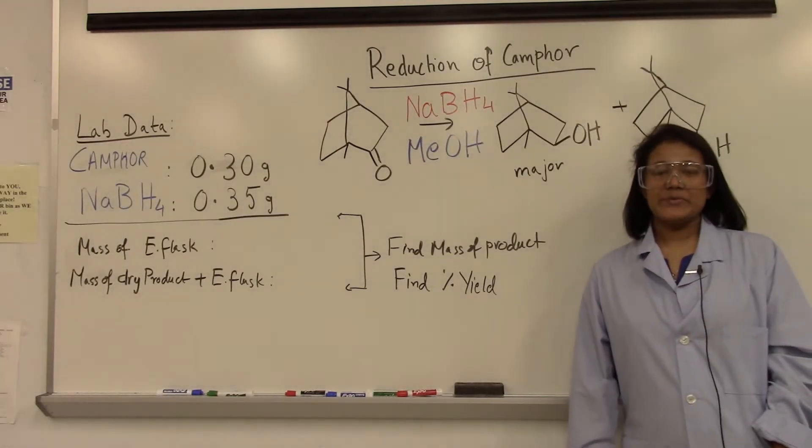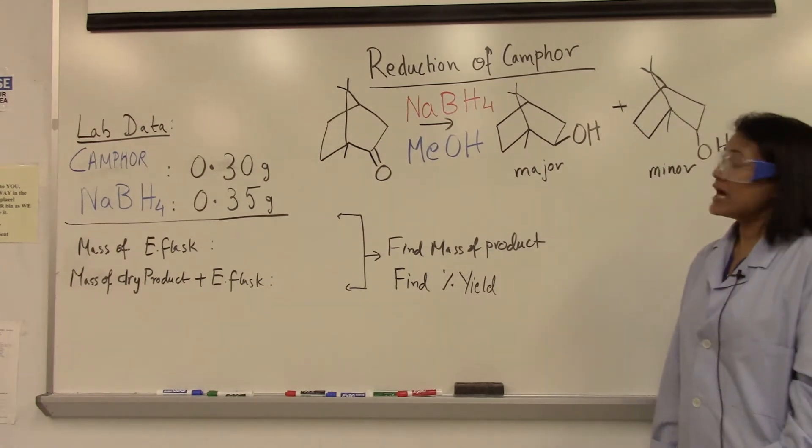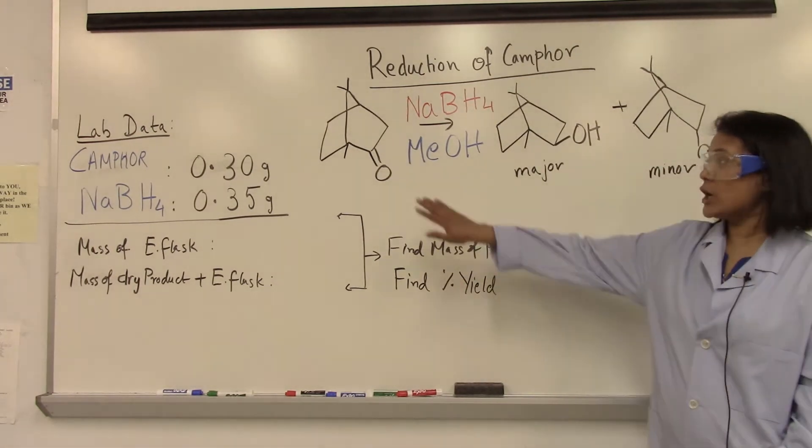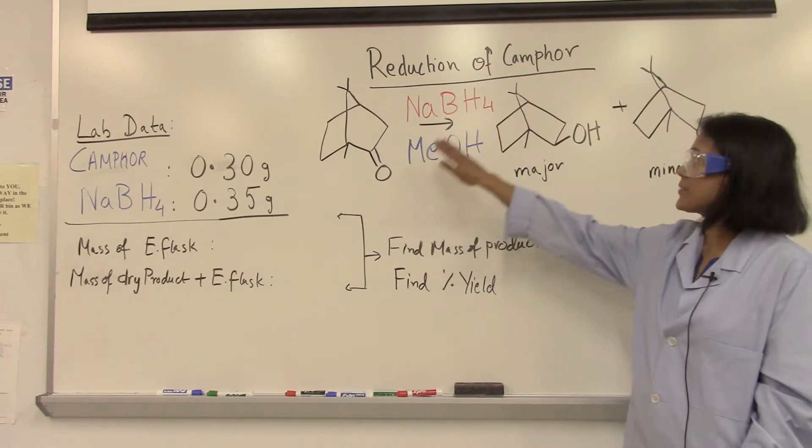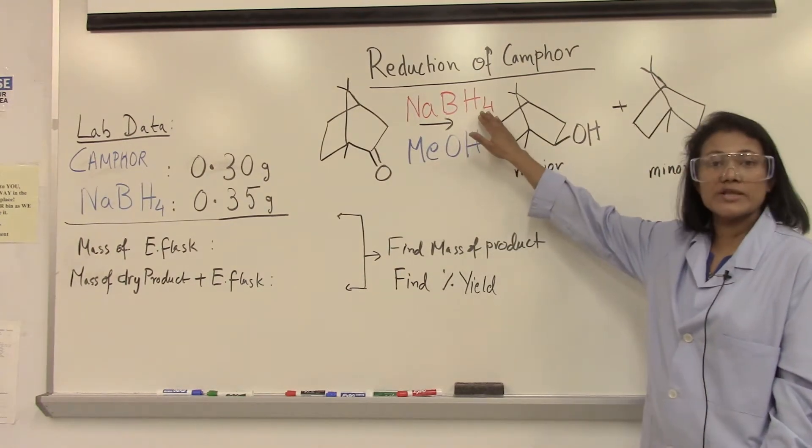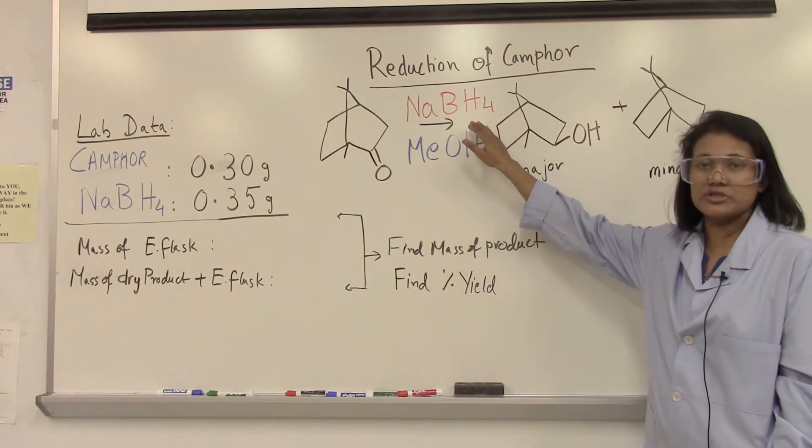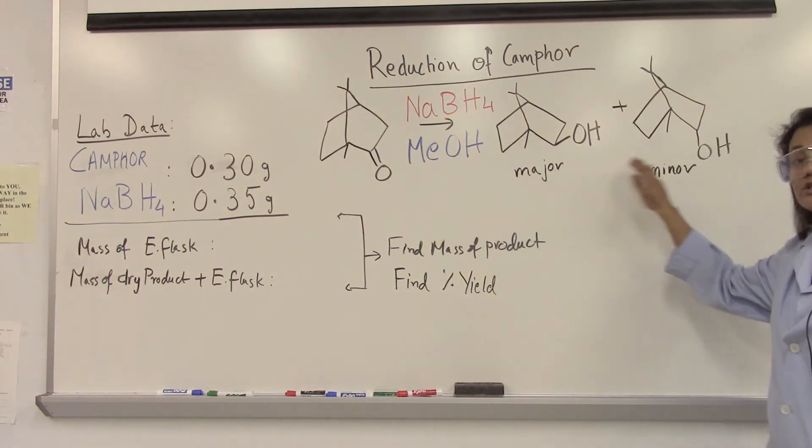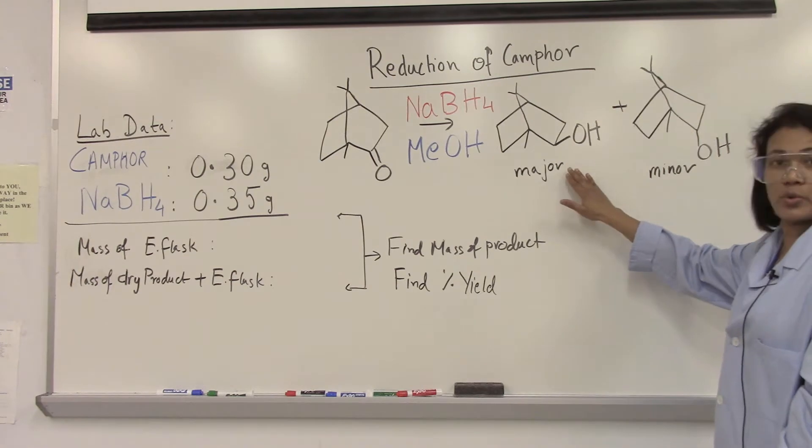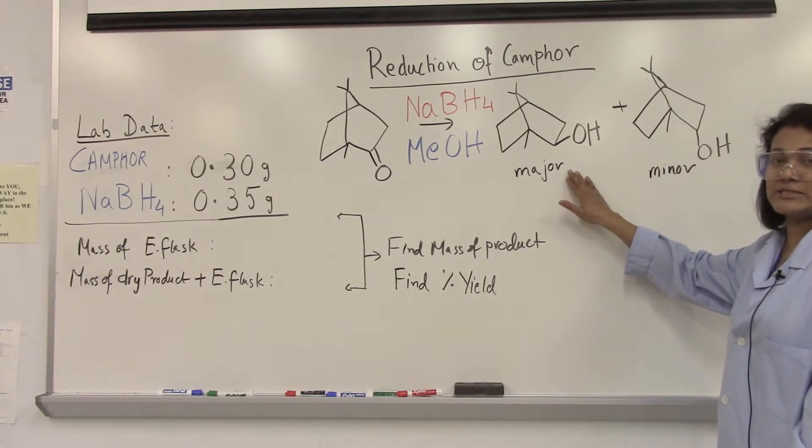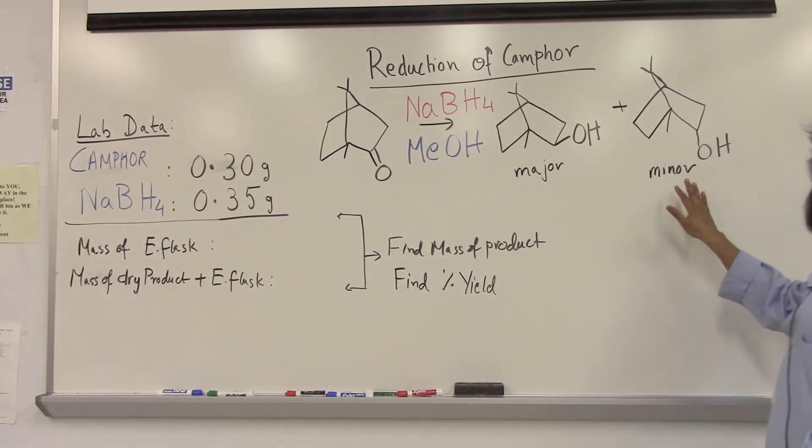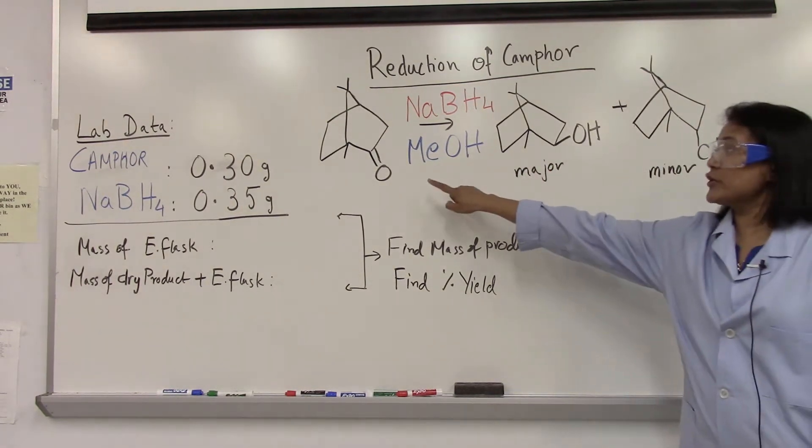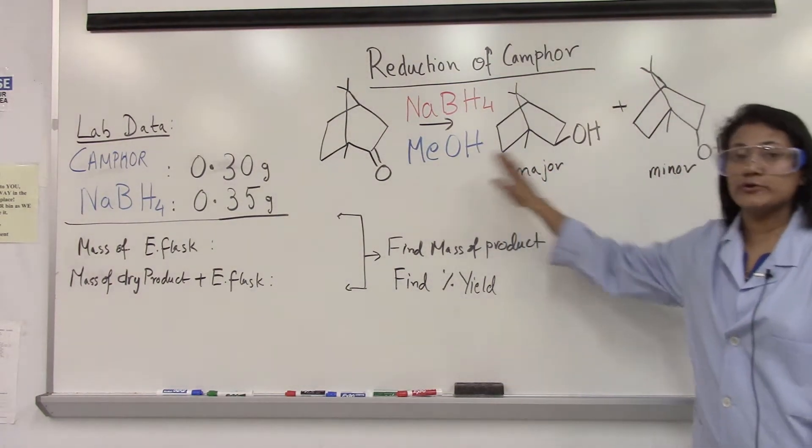Today's experiment is reduction of camphor. We start with camphor, which is a ketone, and we are reducing it with sodium borohydride. That's your reducing agent and methanol is your solvent. We're expecting two different products. One is the equatorial product, which is expected to be the major product, and the axial product would be your minor product. So we are converting or reducing our ketone to alcohol.